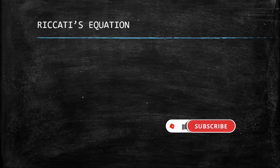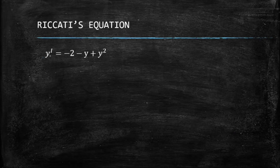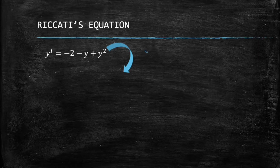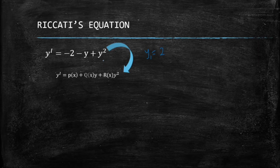The example we'll solve is: y' = -2 - y + y². With Riccati's equation, they'll always give you a value for y₁. Here, y₁ = 2. The Riccati's equation is expressed in this standard form, and they will always give you the value of y₁.